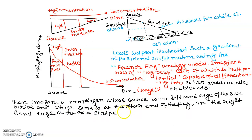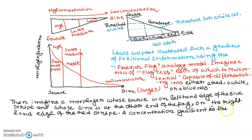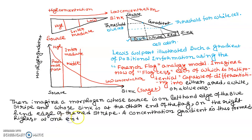A concentration gradient is thus formed, highest at one end of the flag tissue and lowest at the other.